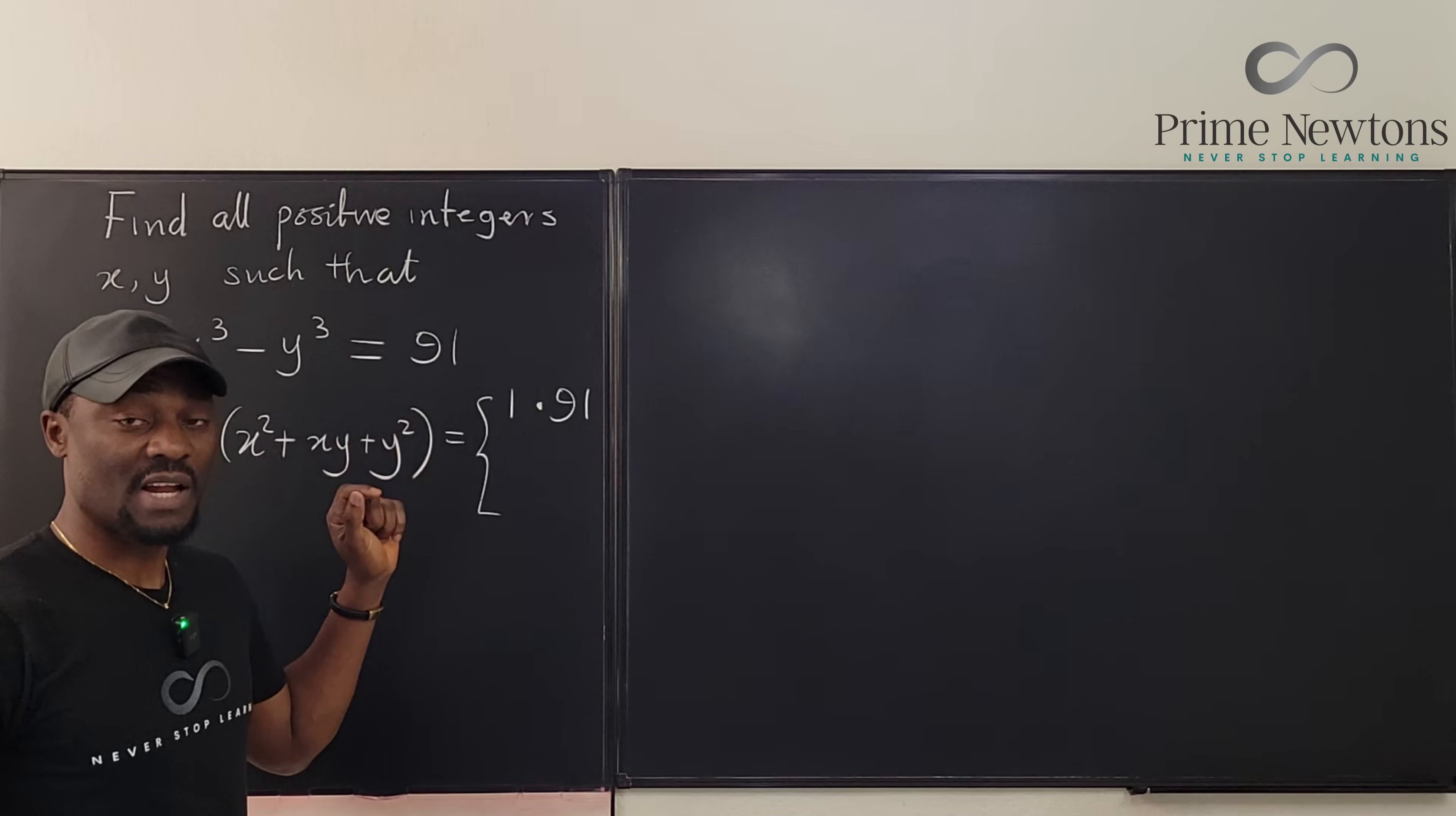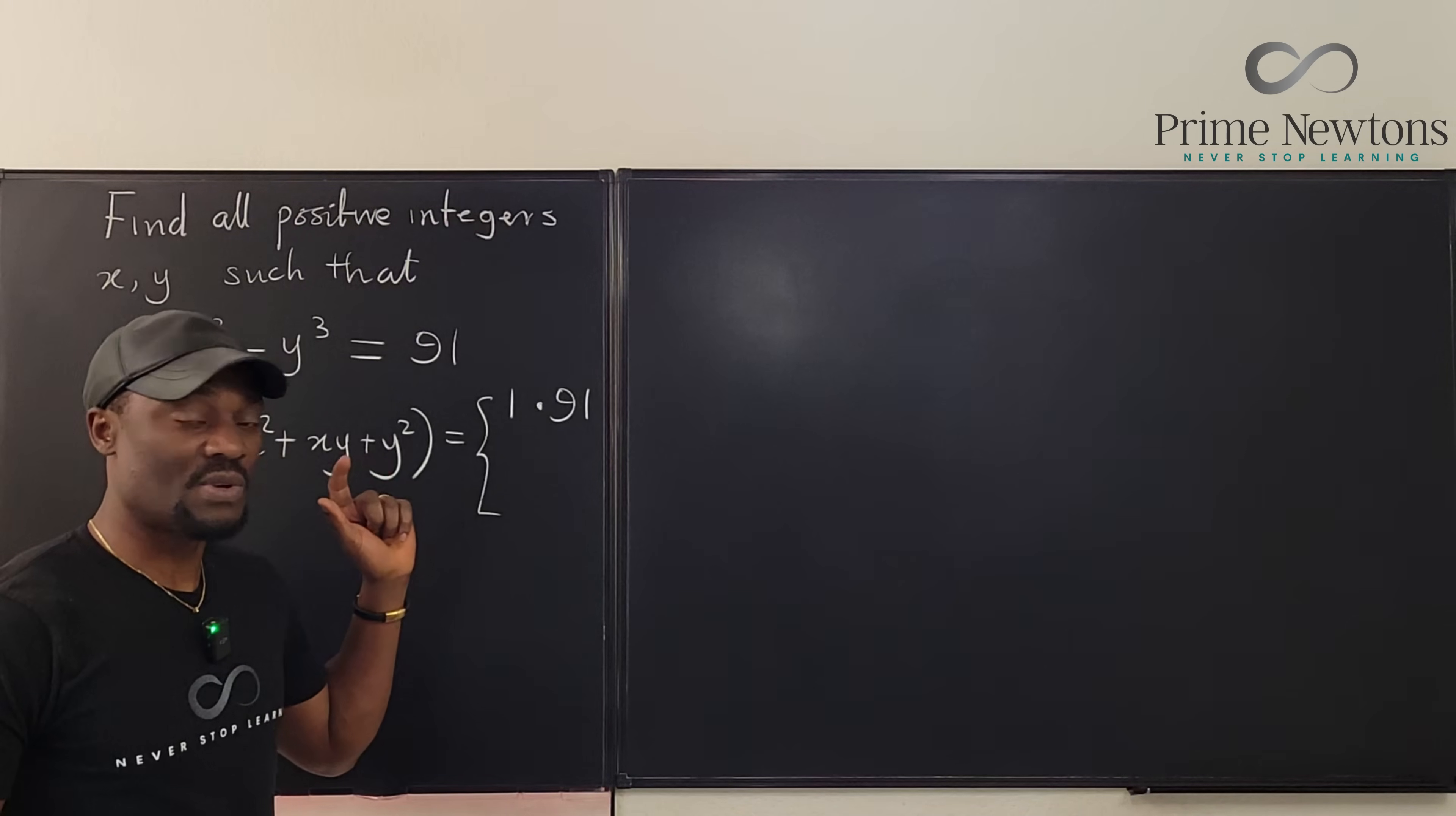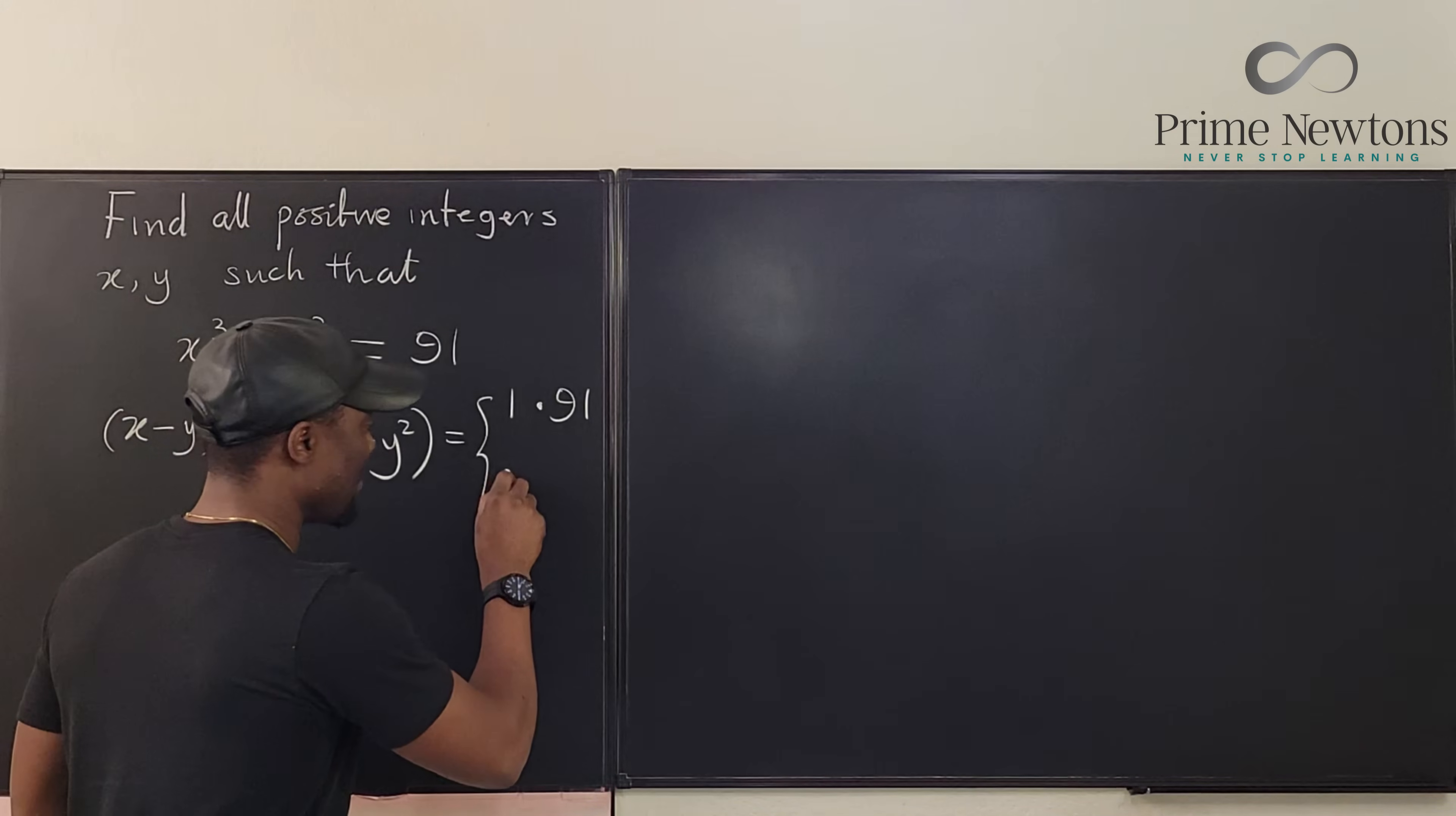I know 7 divides 91. So it's going to be 7 times 13. And I think that's the only other combination you're going to have.